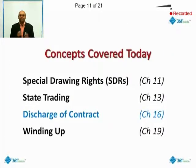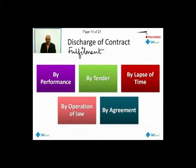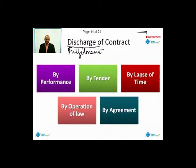So the next topic is Discharge of Contract. Discharge of contract can happen by five means: by performance, by tender, by lapse of time, by operation of law, and by agreement.